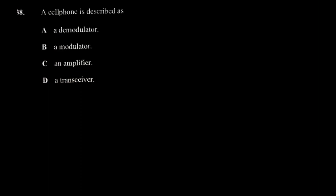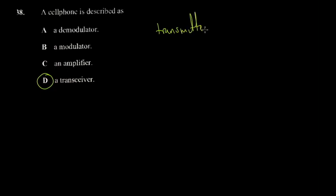Let's continue to question 38. A cell phone is described as: a demodulator, a modulator, an amplifier, or a transceiver. A cell phone is described as a transceiver — it means a transmitter plus receiver.